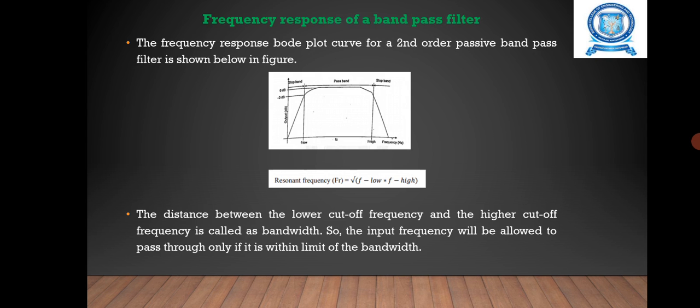As it exceeds that frequency, the output reaches the maximum and stays there until the frequency exceeds the higher cutoff frequency. The peak at which the output gain stays maximum is called the resonant frequency. It is simply the geometric mean of the upper and lower cutoff frequencies.